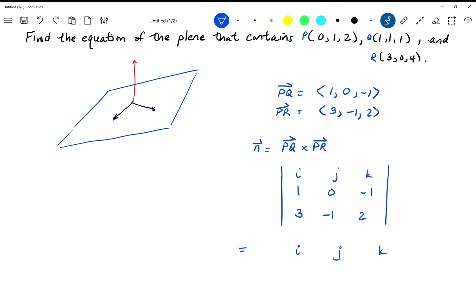So the i component is, remember how we do this? We basically cross out the row and column that the i is in, and then we take the other determinant. So that would be, let's see, zero times two is zero minus one, so that's negative one.